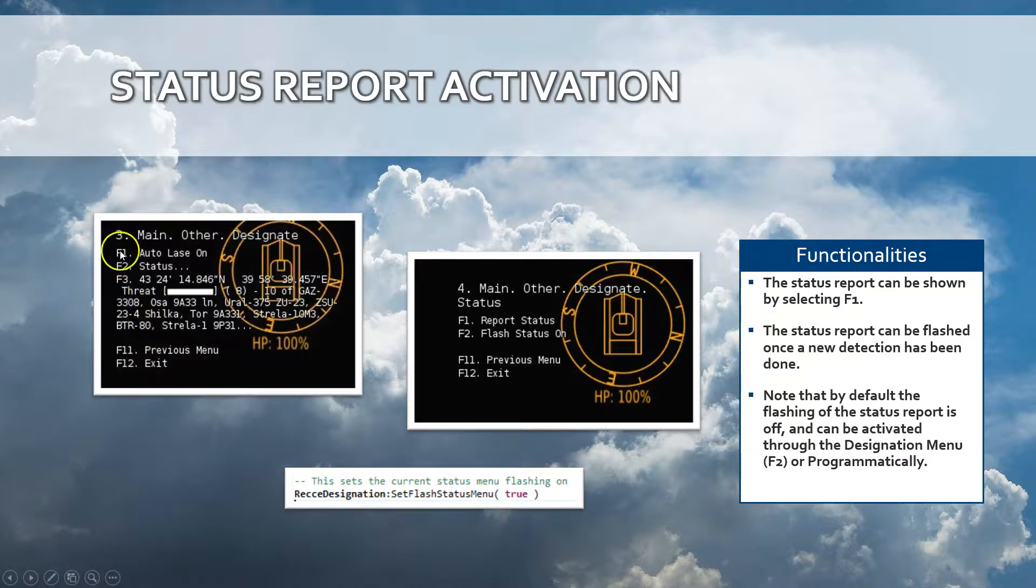Another option that is important to mention is the auto-lase. The auto-lase will automatically start lasing the targets when the reconnaissance vehicles detect those targets. So there is no requirement then to start selecting the specific set of targets that need to be lased or designated.